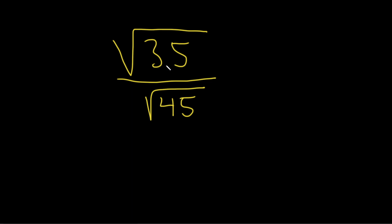So the idea is to try to break these up. So when we think of 35, we think that 7 times 5 is equal to 35. And so that's pretty much all we can do with the numerator. So the square root of 7 times the square root of 5 divided by.